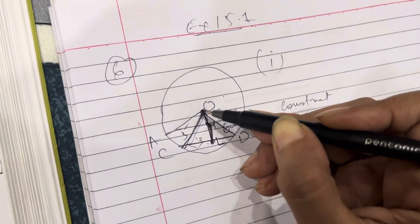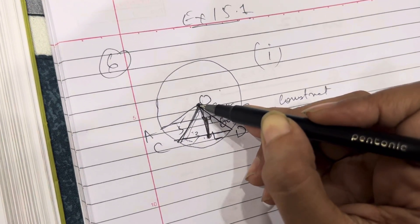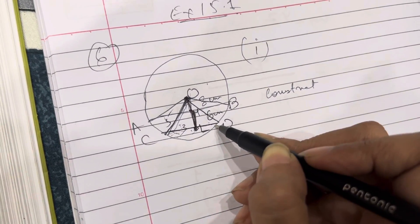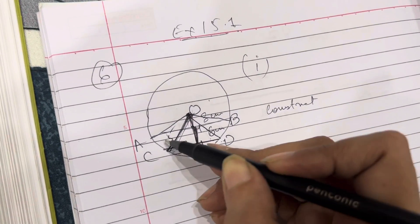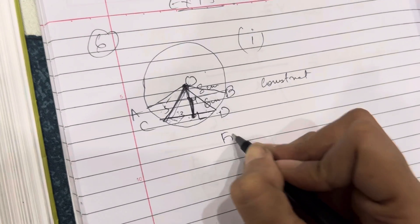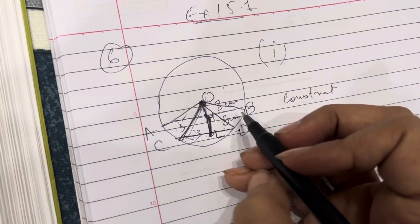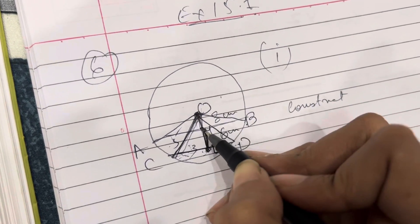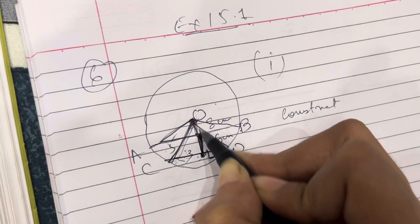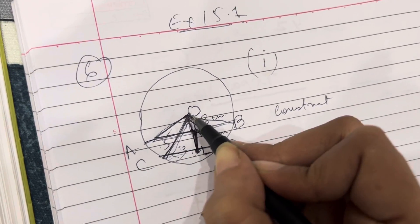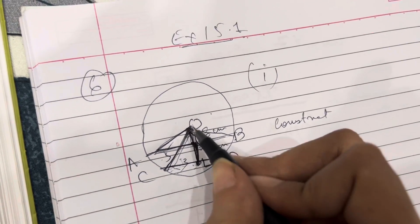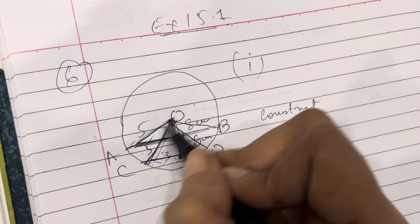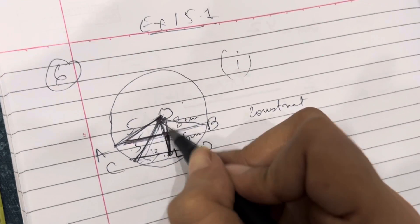Since the perpendicular from the center bisects the chord, CL equals LD which is 3, because the whole chord CD is 6. OC is the radius, which is 5, so we can find OL using the right triangle. Similarly, for triangle OAM: AB is 8, so OM bisects it, making this part 4, and OA is again the radius, which is 5. So we can find OM.